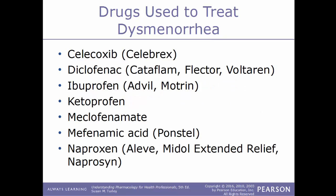Examples of drugs used to treat dysmenorrhea include celecoxib (Celebrex), diclofenac (Cataflam, Flector, Voltaren), ibuprofen (Advil, Motrin), ketoprofen, meclofenamate, mefenamic acid (Ponstel), and naproxen (Aleve, Midol Extended Relief, Naprosyn).